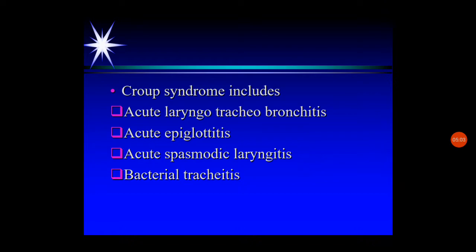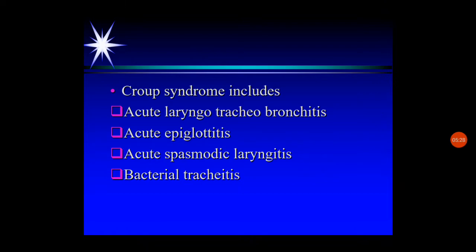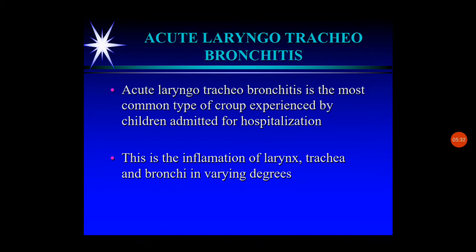CROUP syndrome is a symptom complex with four disease conditions sharing the same four manifestations. These four conditions are: acute laryngotracheobronchitis, acute epiglottitis, acute spasmodic laryngitis, and bacterial tracheitis. In each of these conditions the four CROUP symptoms are present, and all are upper respiratory tract infections. We will discuss each condition in detail. The first is acute laryngotracheobronchitis — the word itself indicates inflammation of the larynx, trachea, and some part of the bronchi.